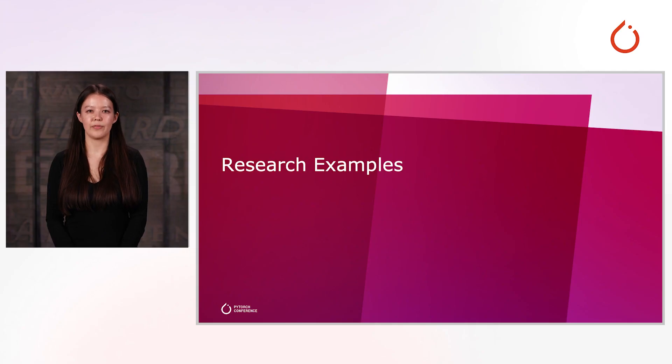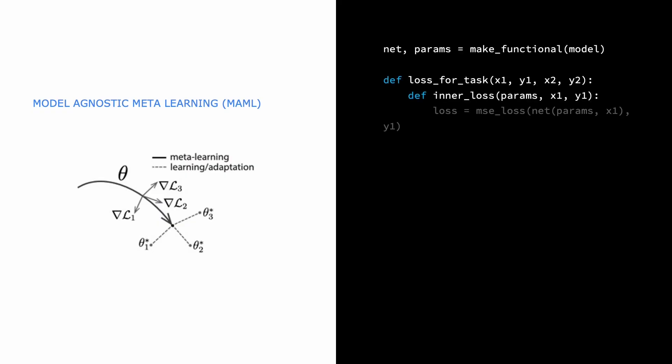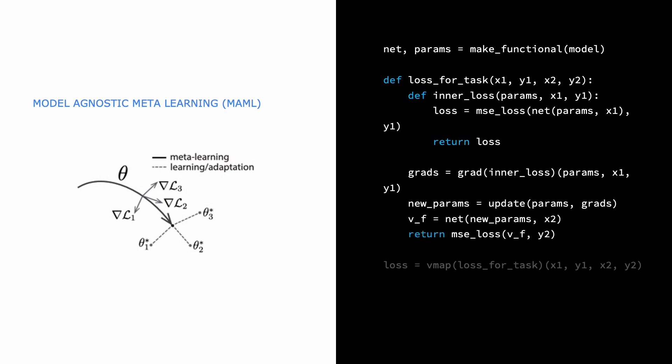Now, we'll look at some examples of FuncTorch from research. In meta-agnostic meta-learning, commonly called MAML, a user trains their model on a batch of tasks given here by x1 and y1. For each of these tasks, the model is trained on a new learning task given by x2 and y2. FuncTorch allows for efficient batching of tasks in the inner loop.